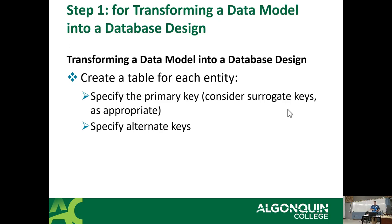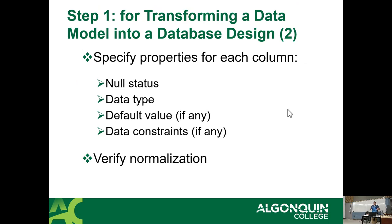Then you're going to specify the properties for each column — each attribute becomes a column or field. You'll define the null status: not null means you must supply a value, so if you try to add a row with a column marked not null and don't supply a value, it will return an error. Null means the value is optional and defaults to no value. For example, a student might have a primary phone number that is not null, but a secondary phone number that is nullable because not everybody has a second phone number.